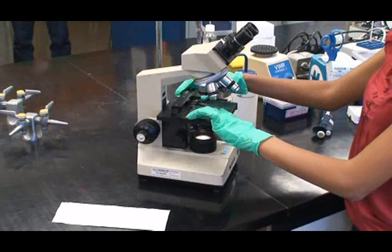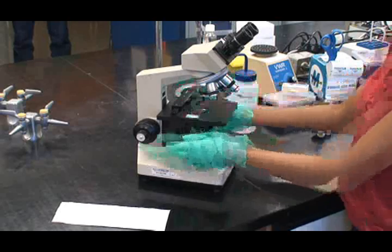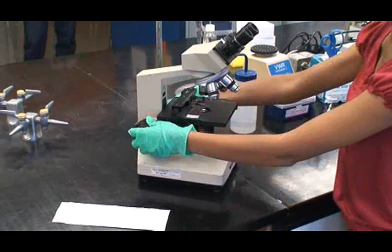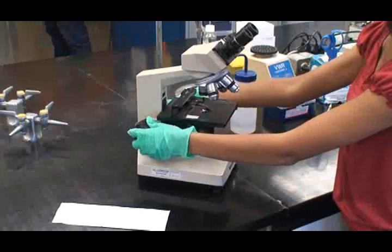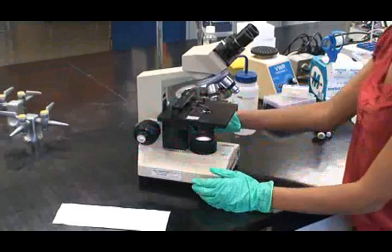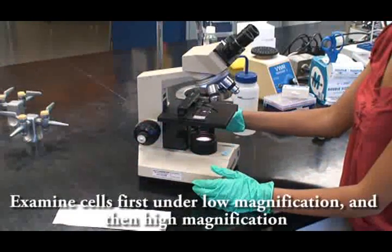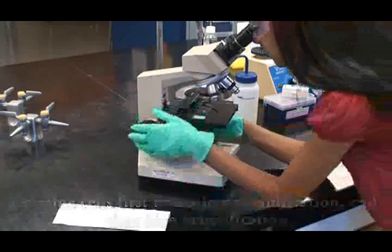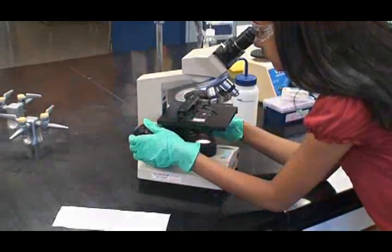Examine your cells under low and then higher magnification. If you cannot find cells, the cells may be clumped, so scan the slide to find the cells that have floated free.